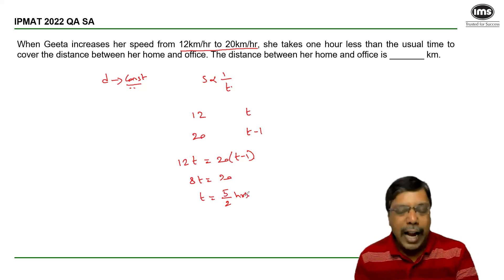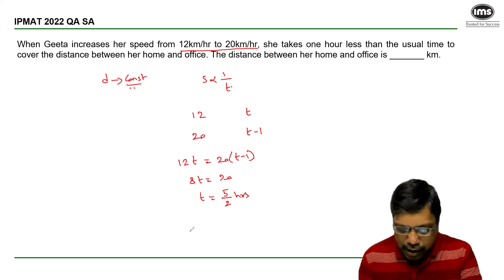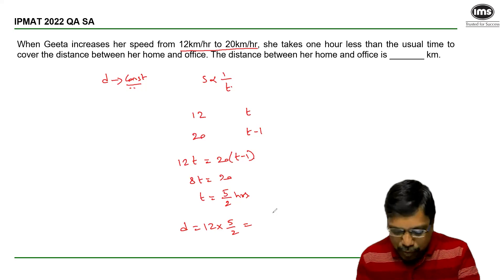Now, since we want to calculate the distance, substitute t in one of these cases. So the distance is 12 into 5 by 2, speed into time, which is equal to 30 km.